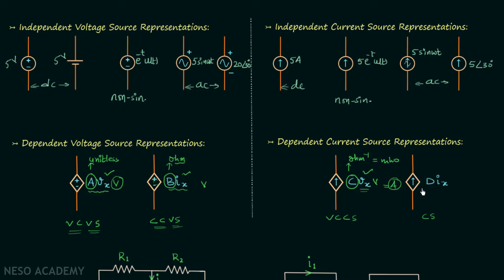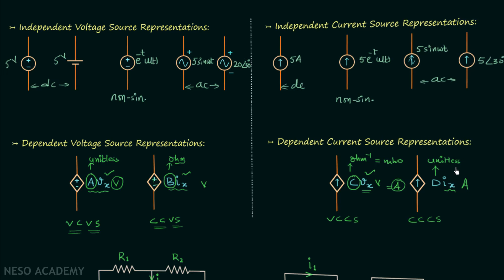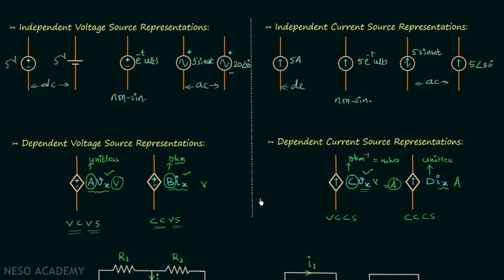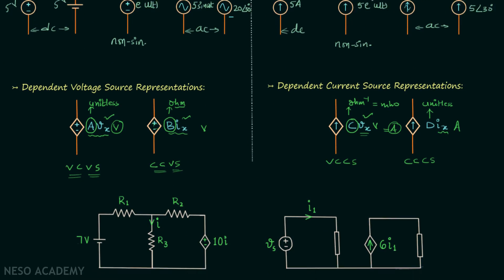The last type is a Current Controlled Current Source (CCCS), where current Ix controls the current source. The constant D is unitless, because both Ix and D·Ix must have units of amperes. This covers all four dependent source representations.